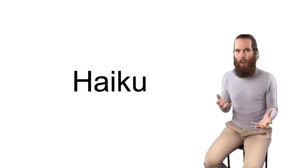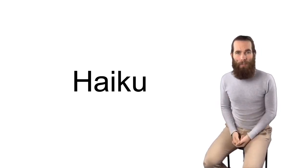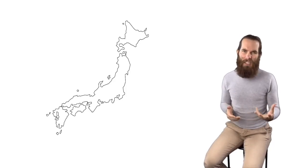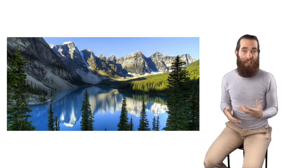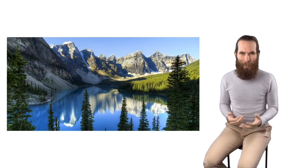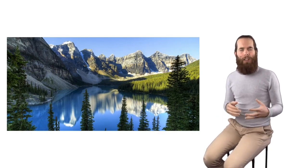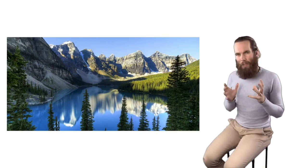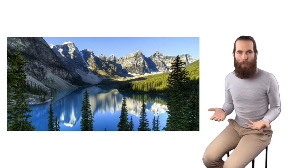G'day guys and welcome to this video. Today we're learning how to write haikus. But what is a haiku? Haikus have been around for hundreds of years. They originally come from Japan and they focus on seasons, nature and other natural things traditionally. But of course now we can change that up and write about different kinds of things if we want to. They're one of the shortest kinds of poems and they capture a moment in time in the author's mind.